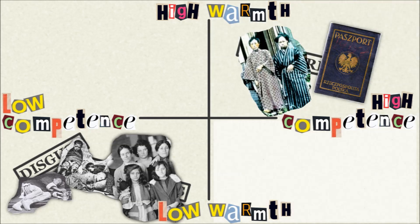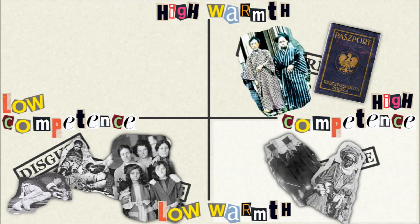Between these two extremes are mixed outgroup stereotypes, high on one dimension but low on the other. For example, enviable groups, such as rich people and business people, seem competent but cold. In the US, Asians and Jews are stereotyped this way, as are career women.